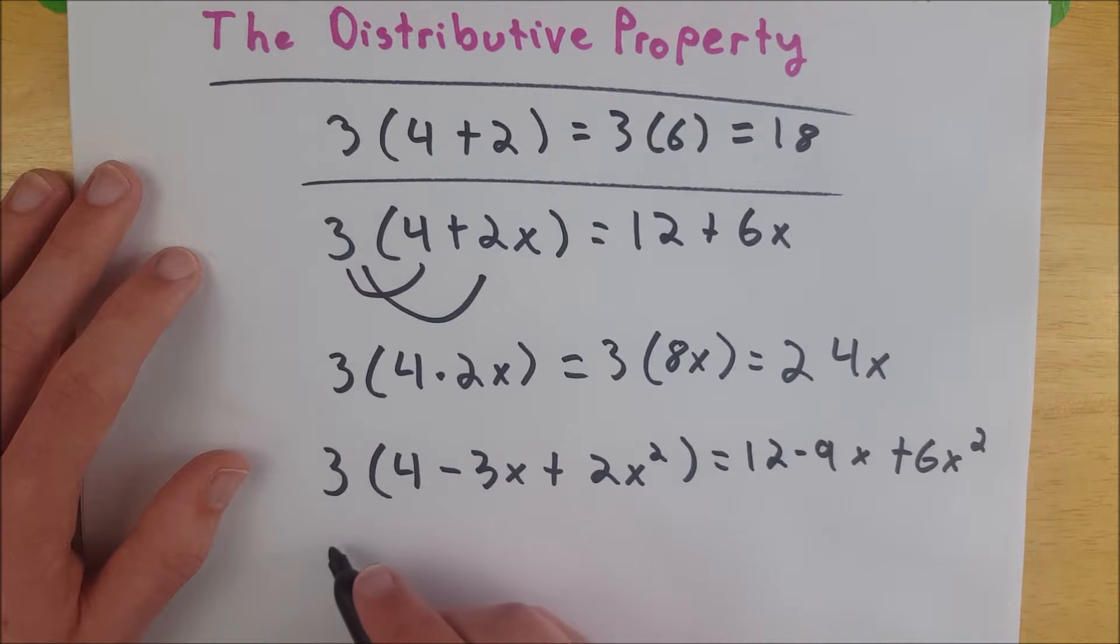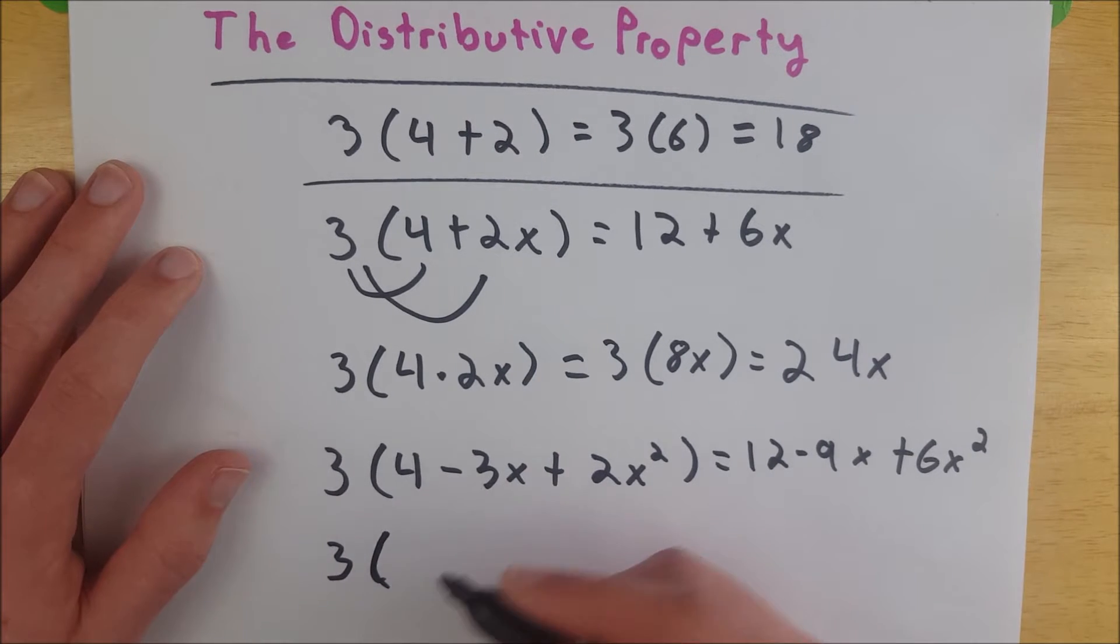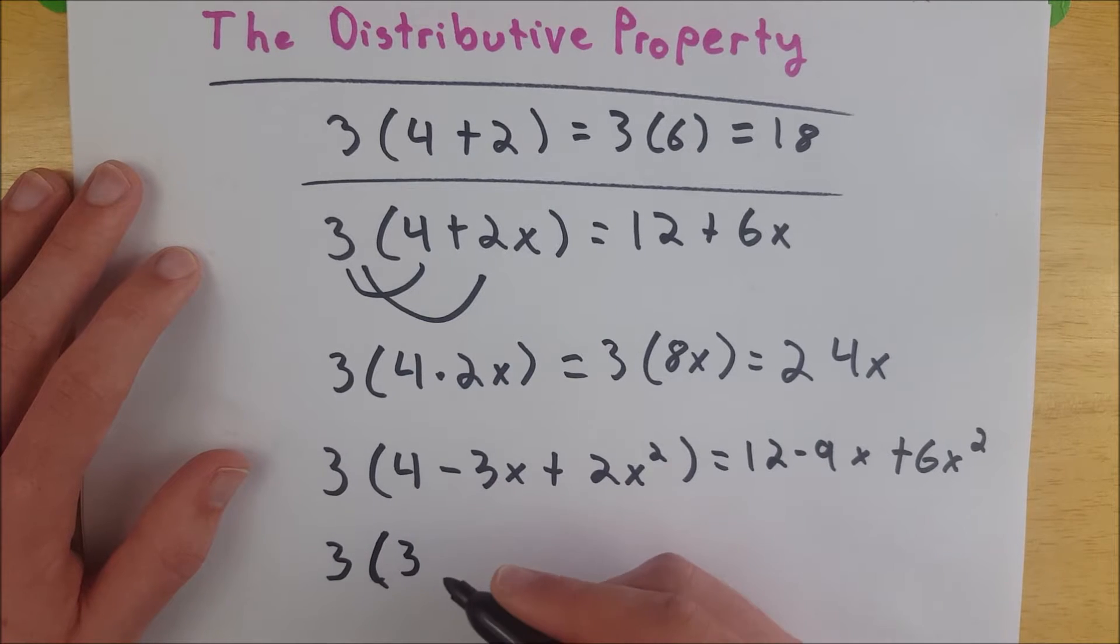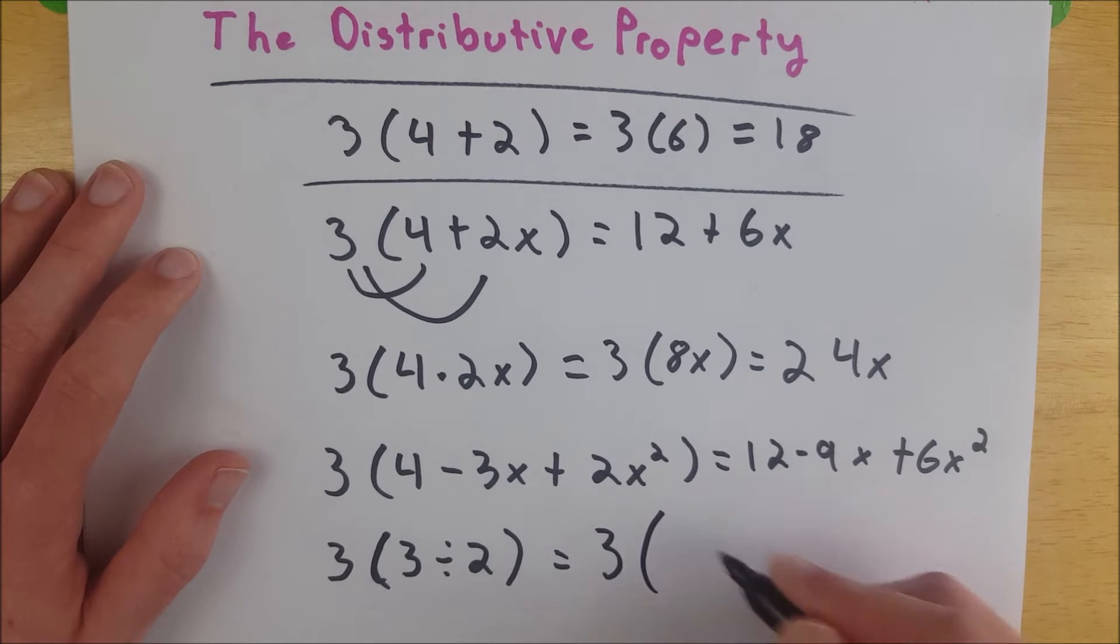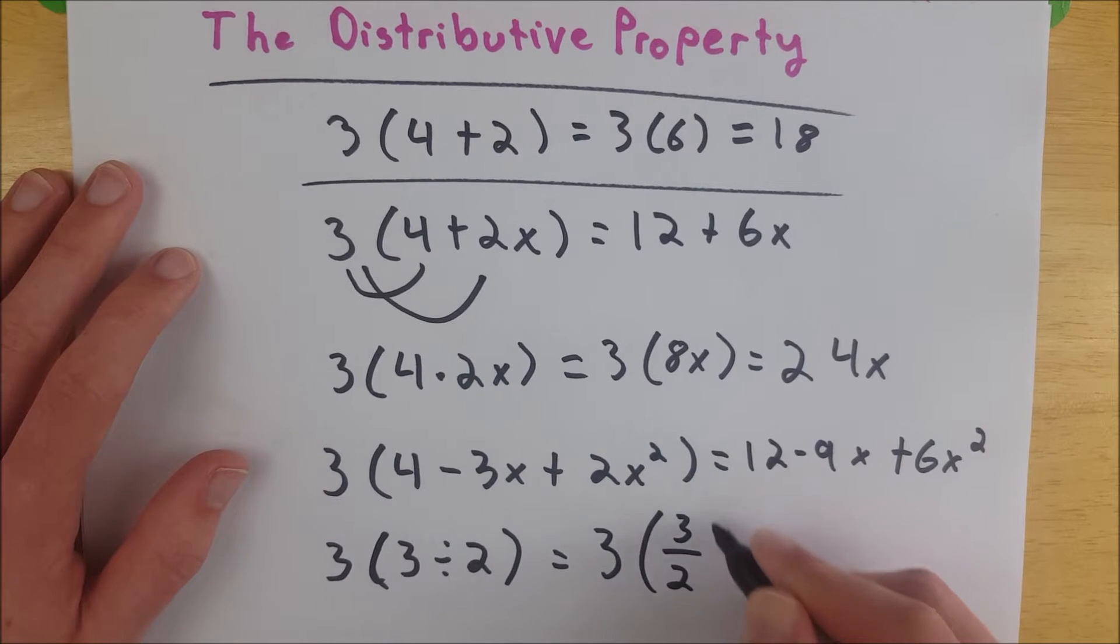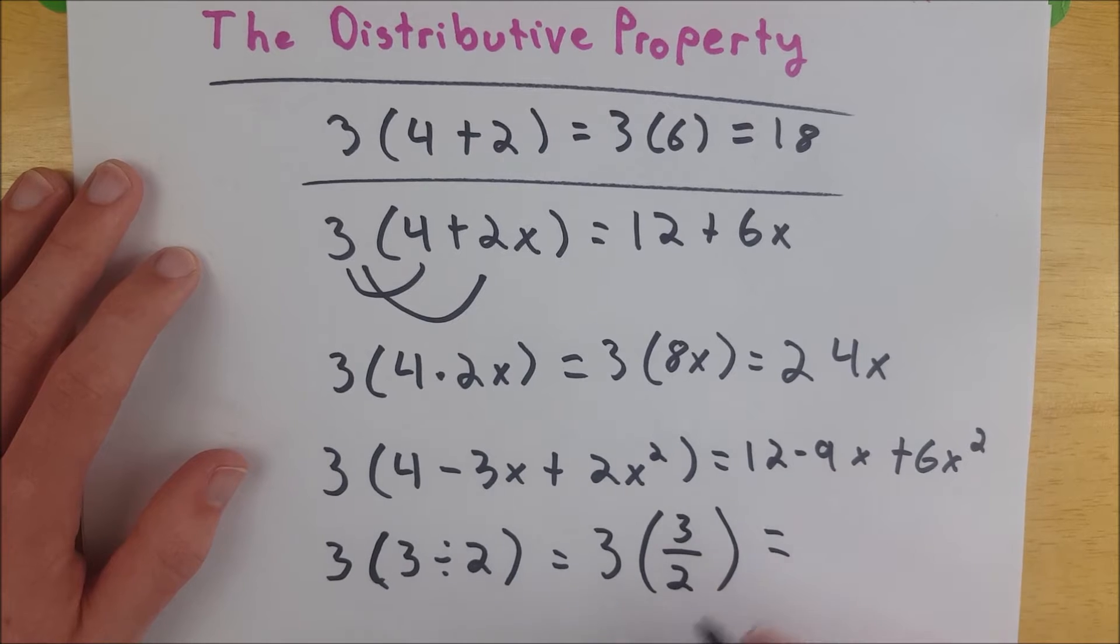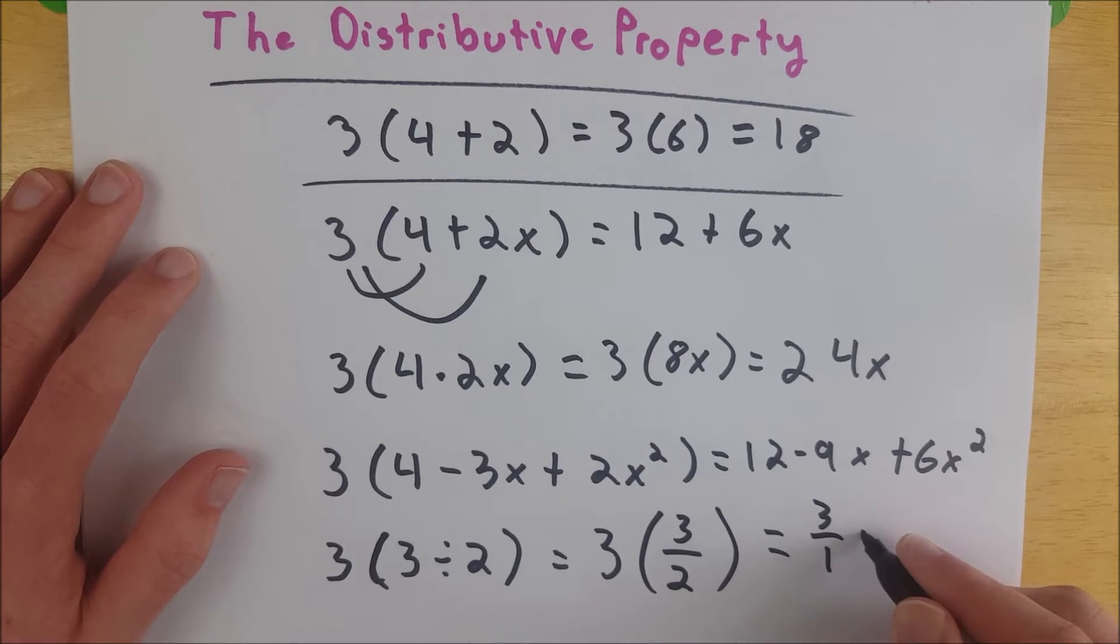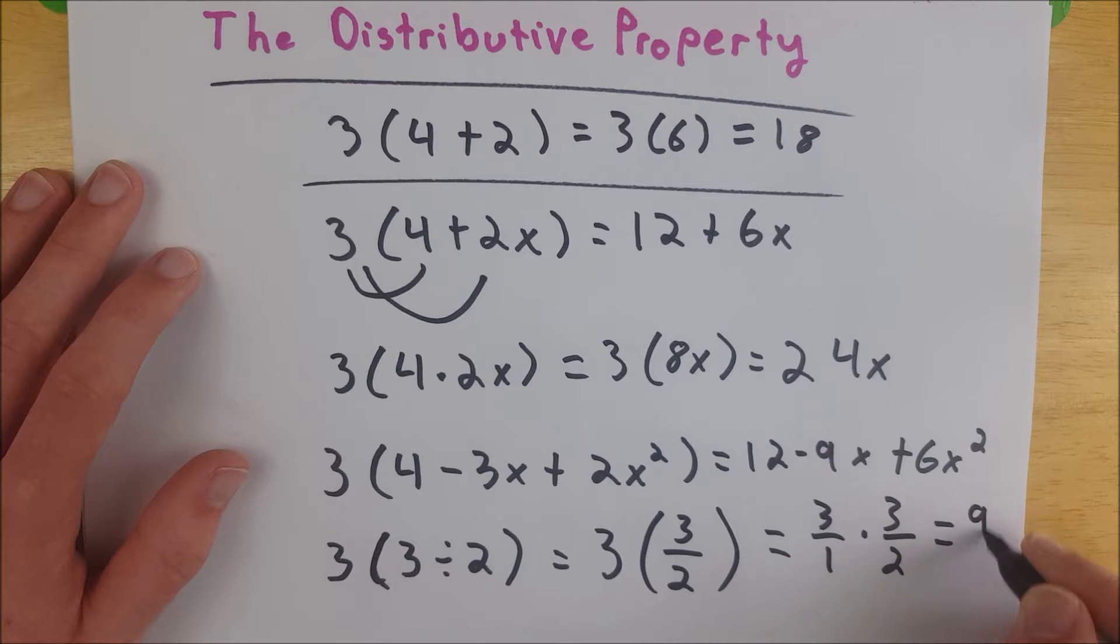Let's take a quick look at what it would be like if we had division in the parentheses. Suppose we had something like 3 divided by 2. Well, we can rewrite this as a fraction and have this be 3 multiplied by the fraction 3 over 2. And that's just equal to 3 over 1 multiplied by 3 over 2, which equals 9 halves.